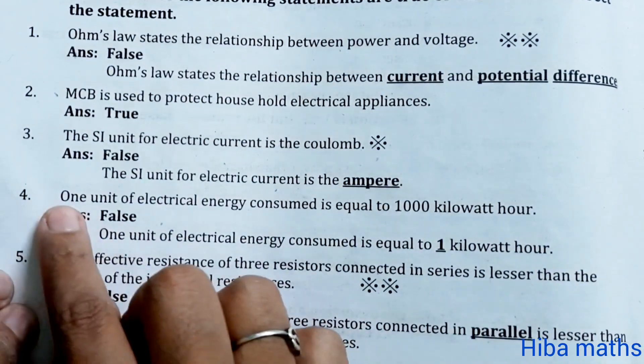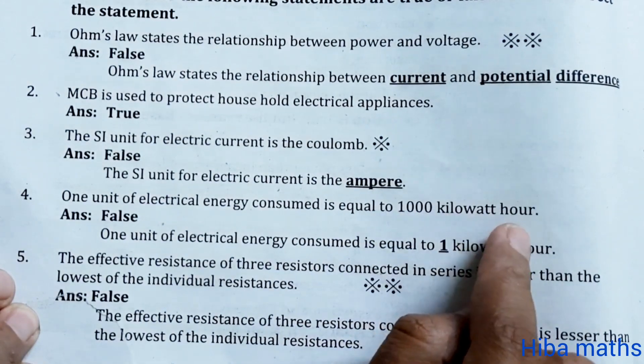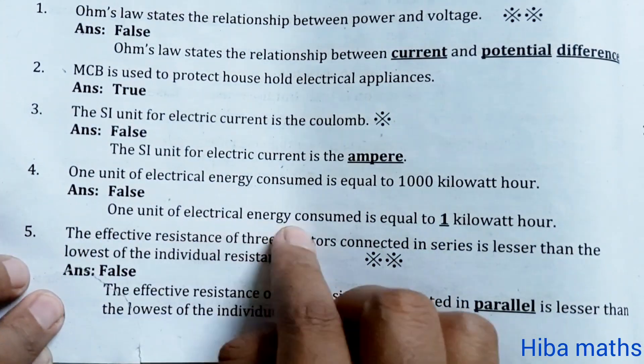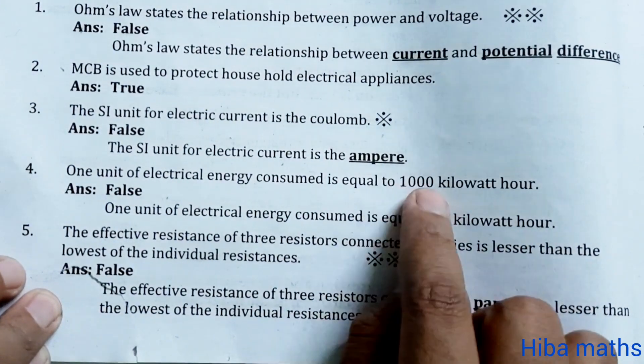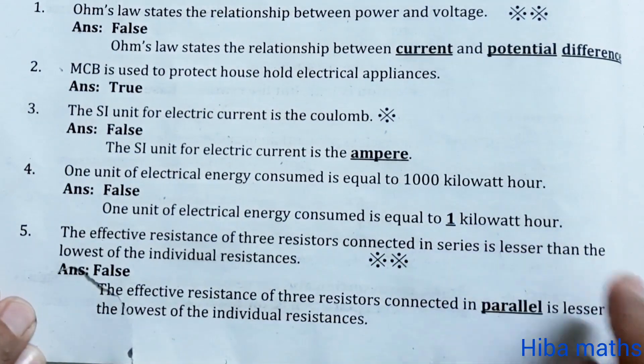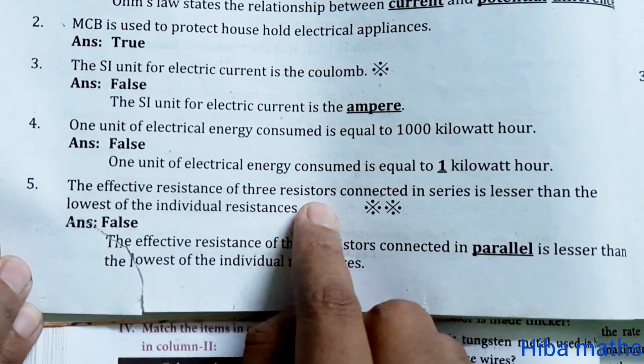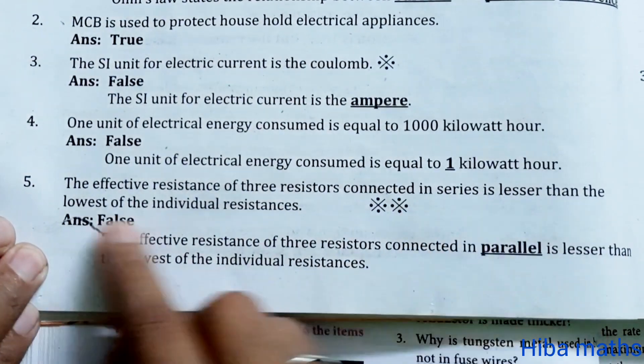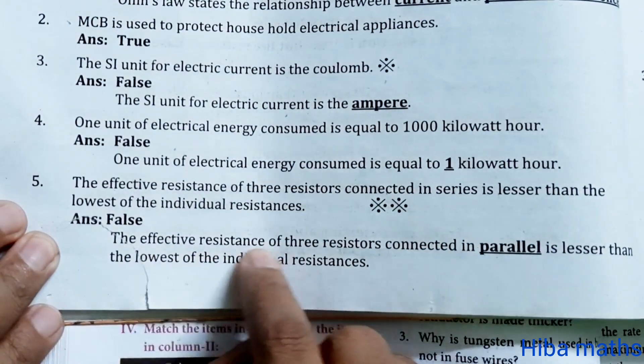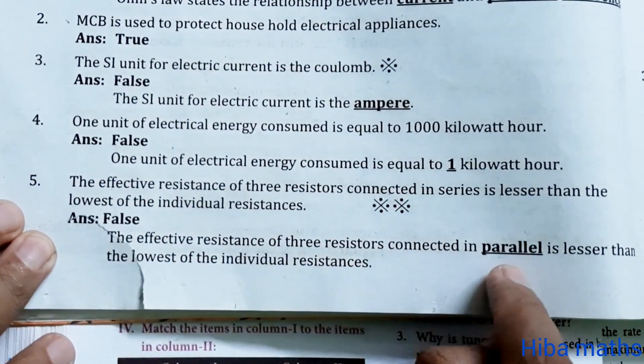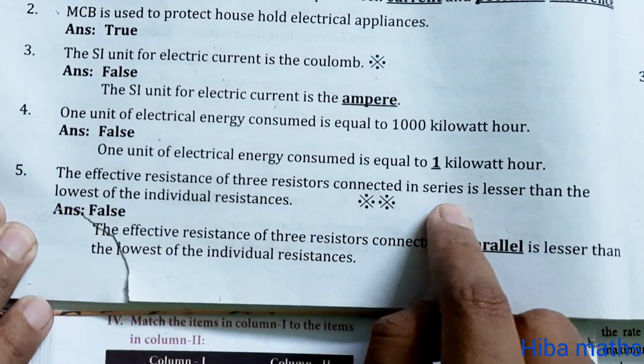Fourth question: one unit of electrical energy consumed is equal to 1000 kilowatt hour. False. One unit of electrical energy is equal to 1 kilowatt hour.